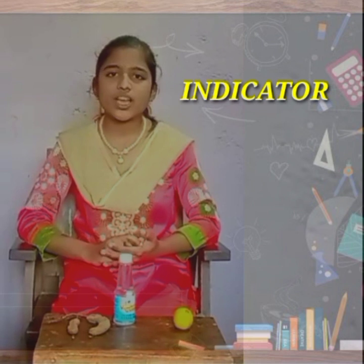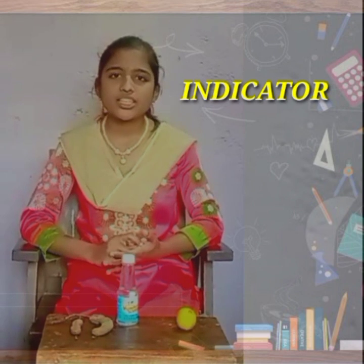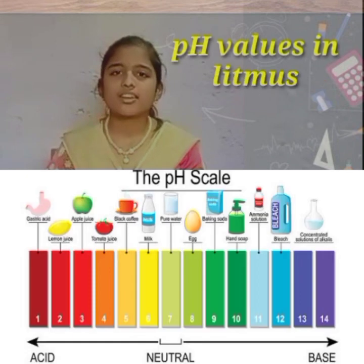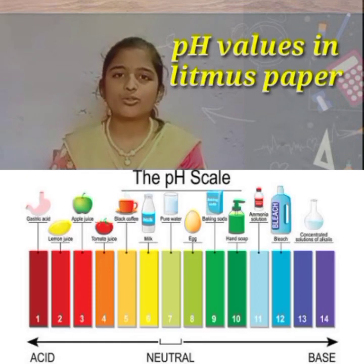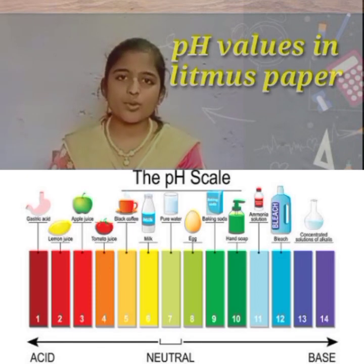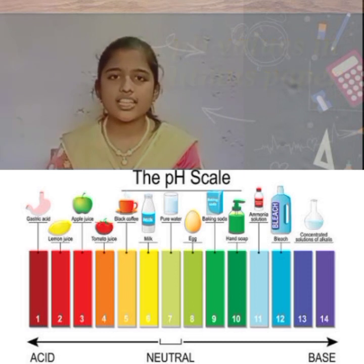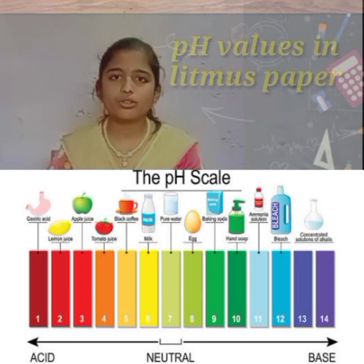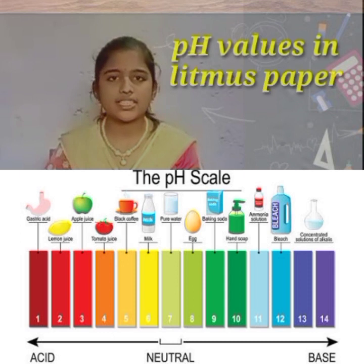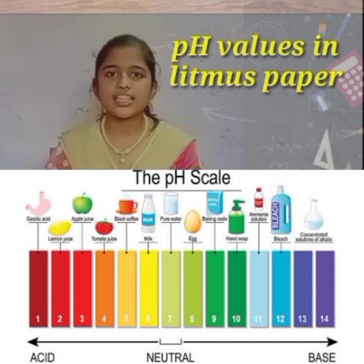Litmus has a pH value. The pH value ranges from 0 to 14. Here, 0 to 6.9 is considered acidic and 7.1 to 14 is considered basic. 7 is considered as neutral.